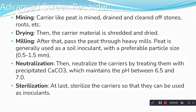Adding inoculants into the soil or plant requires some methods. First is mining — carrier like peat is mined, drained, and cleared of stones and debris. Then the drain process: the carrier material is sheared and dried. Milling: force the peat through a heavy mill. Peat is generally used as a soil inoculant, preferably at a particle size of 0.5 to 1.5 mm; we can also use coco peat. Neutralization: neutralize the carrier by treating it with calcium carbonate (CaCO₃), which maintains the pH between 6.5 to 7. Finally, sterilization: sterilize the carriers so that they can be used as an inoculant.